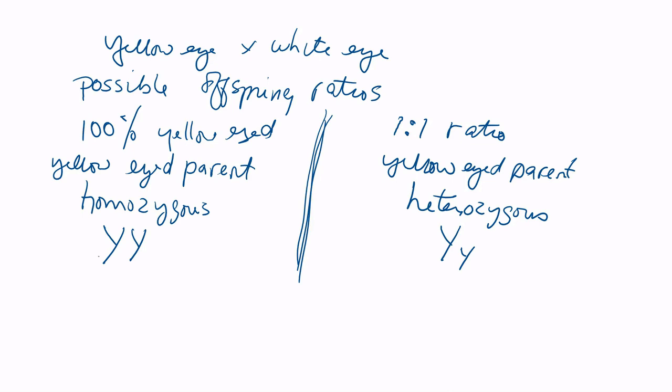Just a quick look here again at how to determine whether the yellow eye is a heterozygous or a homozygous for that trait. If we cross a yellow-eyed with a white-eyed, we have two possible outcomes. If 100% of the offspring are yellow-eyed, then we can determine that the yellow-eyed parent is homozygous, big Y, big Y.